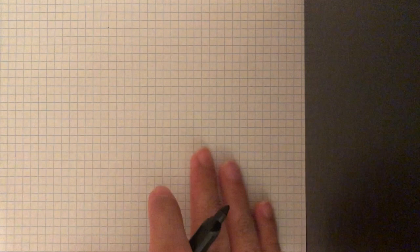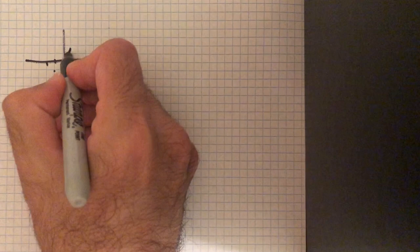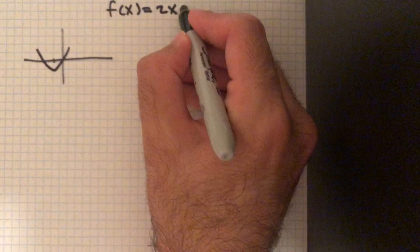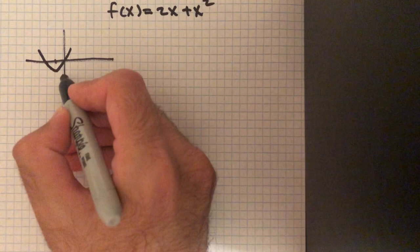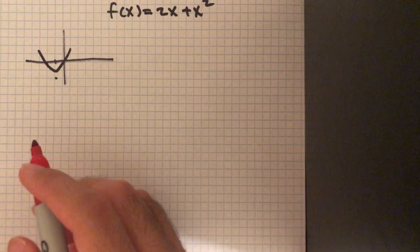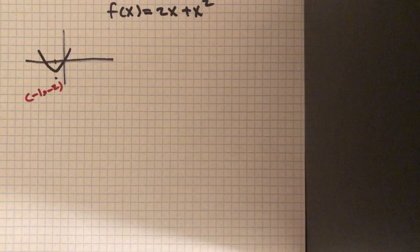Let me graph the function for you here to see what is happening. This is the graph of the function f of x equals 2x plus x squared. The indicated point is at negative 1 and negative 2. We are asked to identify the two possible tangent lines — one with a positive slope and the other one with a negative slope.